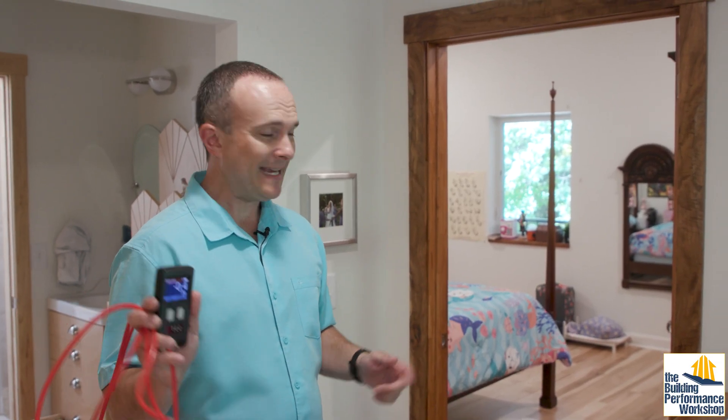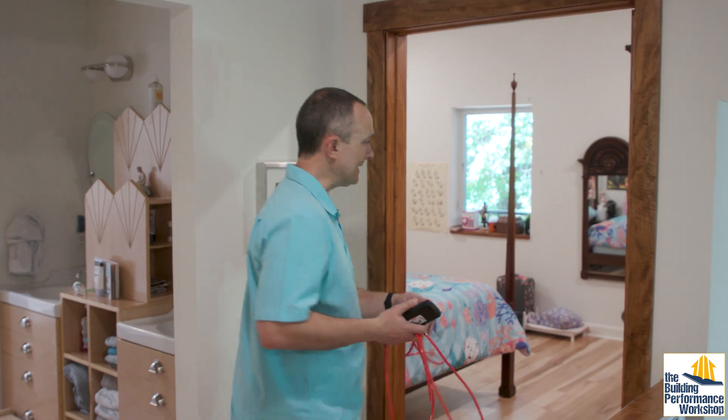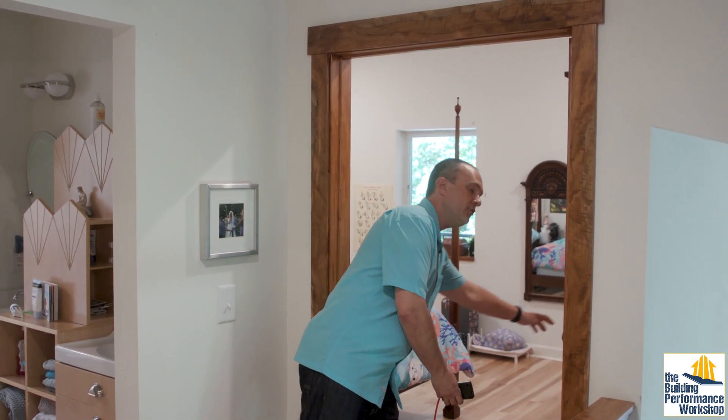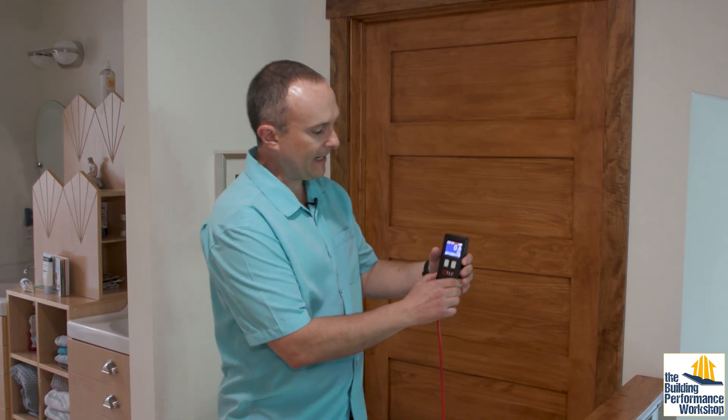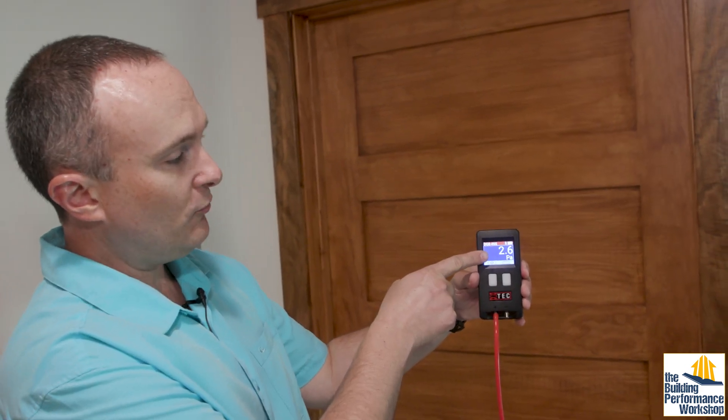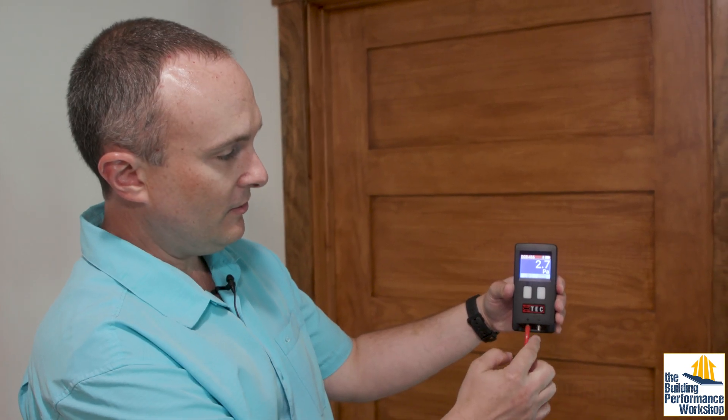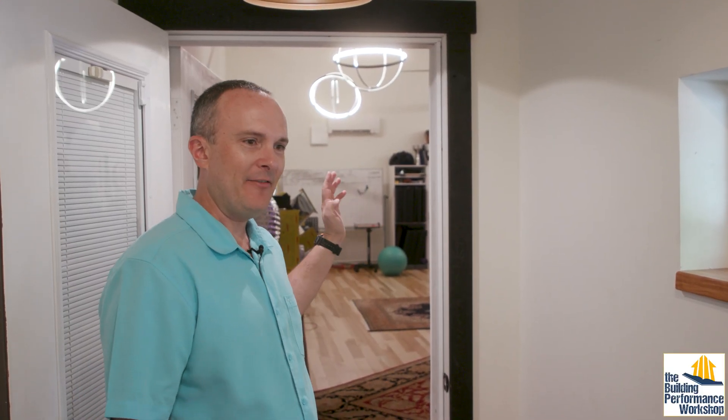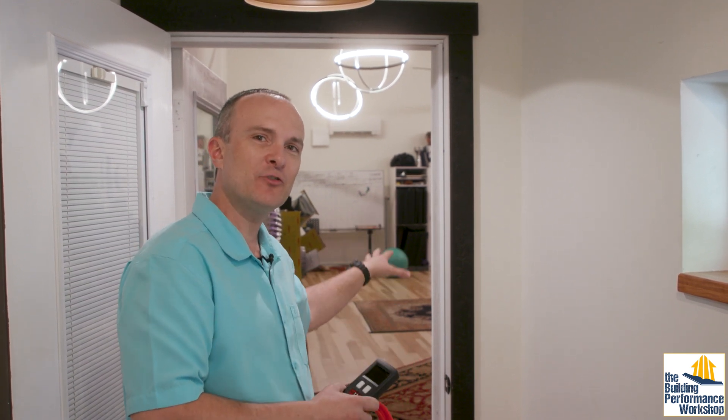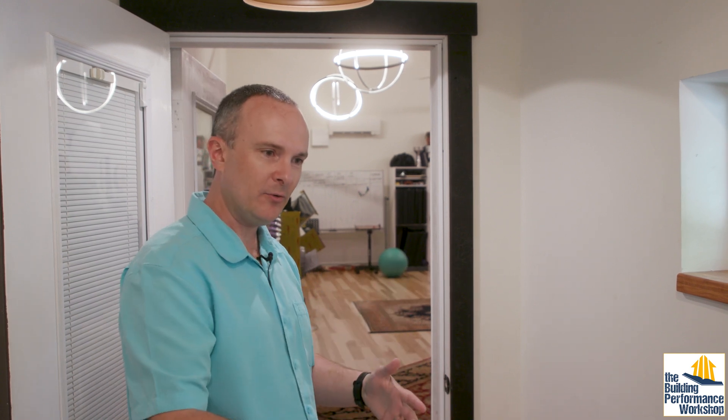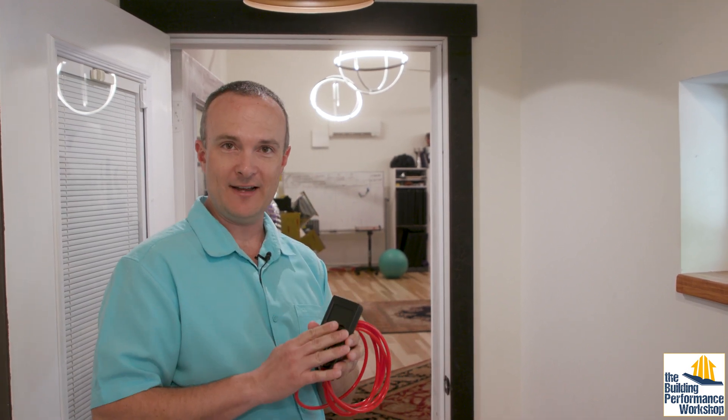So the way that the zonal pressure test for HVAC effects works is I toss my pressure hose into the room, I close the door on the room, and then I can read what the pressure buildup in that room is with reference to the main body of the house. This room is our studio in our house, and if I was to want to find out how much air leakage there is in this room, how connected this room is to outside versus to the house, I could run the blower door here, and then close this door off and put the pressure hose under the closed door to read how much connection there is to outside.